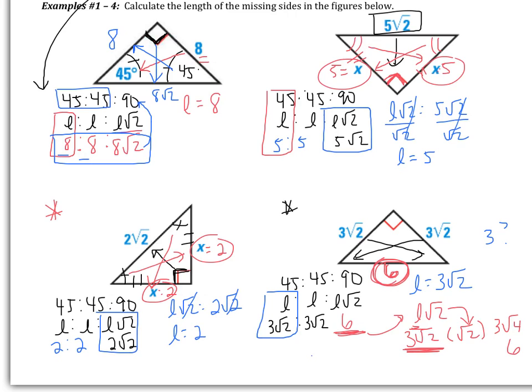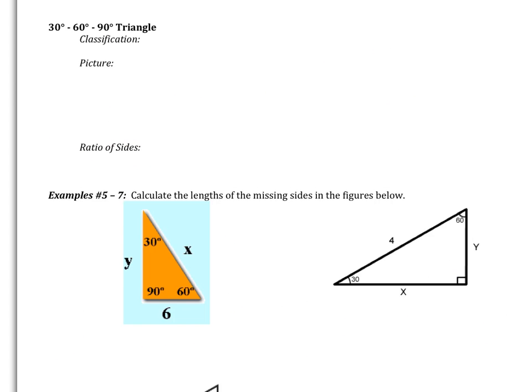That was 45-45-90 triangles. Let's move on to 30-60-90. For 30-60-90 triangles, none of the angles are the same, so none of the sides are going to be the same — this is a scalene triangle. It still has a 90-degree angle, so it's a scalene right triangle.